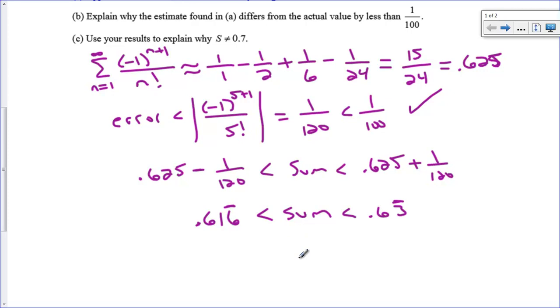Therefore, our sum cannot equal 0.7 like it's saying here in C. It's got to be some number bigger than .616 repeating and smaller than .63 repeating. Using only the first four terms, that's actually a pretty good neighborhood. We know it's somewhere in there. That's a pretty good approximation. And an error statement is actually relatively easy. Let's take a look at the other way this can be asked.